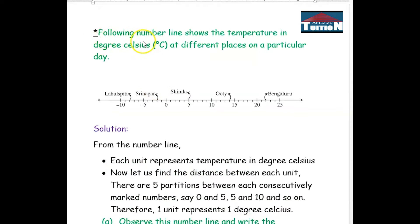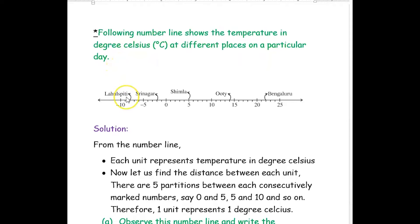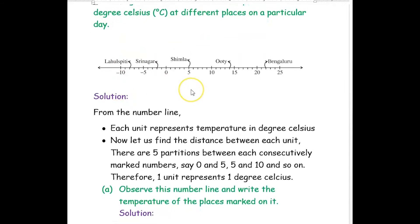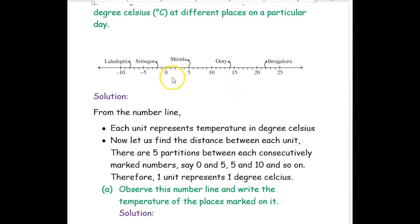Our first question is: the following number line shows the temperature in degree Celsius at different places on a particular day. They have given a few questions. Let us first analyze that number line. From the number line, we can say each unit represents degree Celsius, that is temperature in degree Celsius.